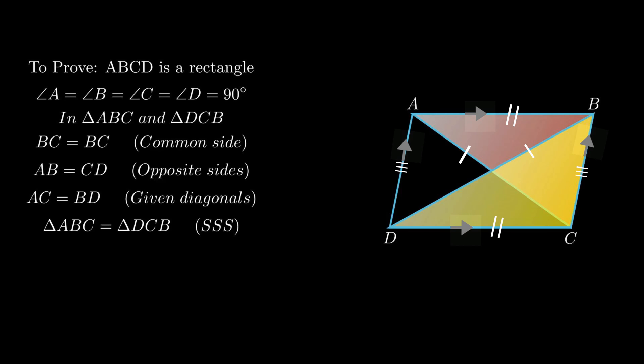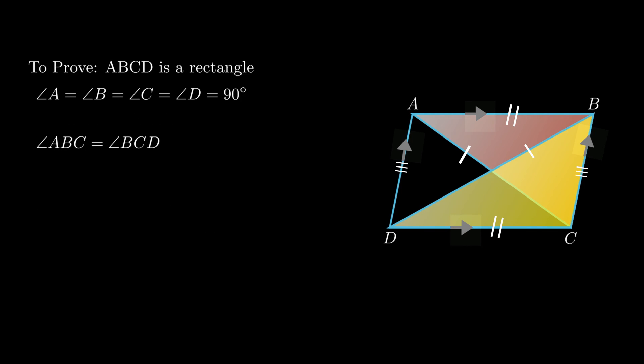By side-side-side rule, triangle ABC is congruent to triangle DCB. By corresponding parts of congruent triangles we conclude angle ABC equals angle BCD, or angle 1 equals angle 2. As side AB is parallel to side CD, therefore